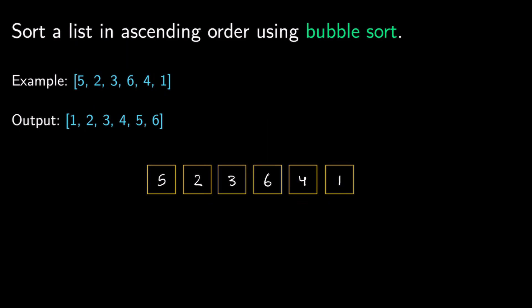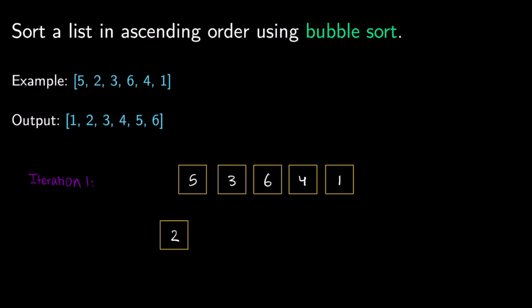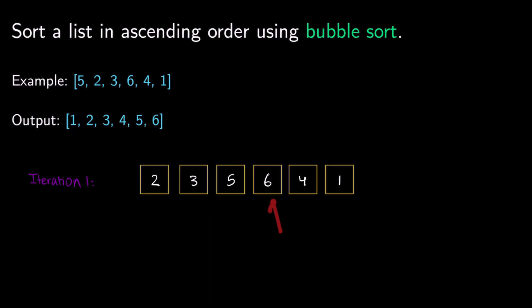Let's call this iteration 1. We start by considering the first two elements, 5 and 2. Since 5 is greater than 2 and we want ascending order, we swap these. Next we consider 5 and 3 — 5 is greater than 3, so we swap those as well. Then we consider 5 and 6: 5 is already less than 6, so we don't have to do any swaps.